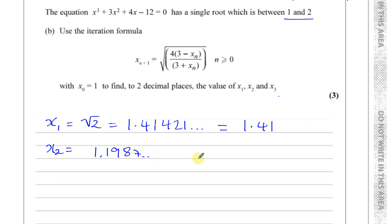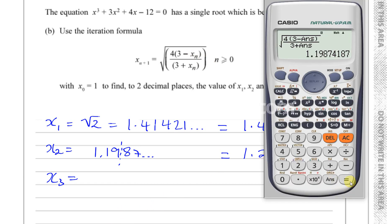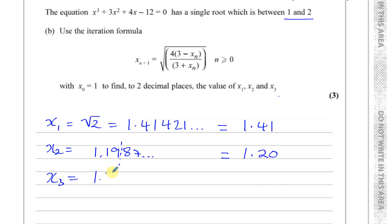And x3 is found by substituting this value back in, done simply by pressing equals again. That gives 1.30996, which to 2 decimal places is x3 equals 1.31. So that's part B done — x1 = 1.41, x2 = 1.20, x3 = 1.31. Pretty simple. That's part A and B done, now we go to part C.